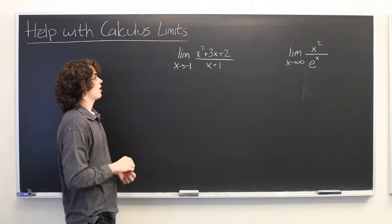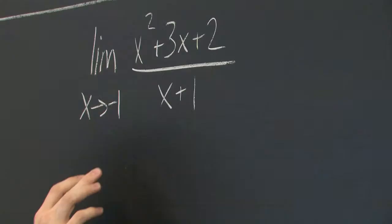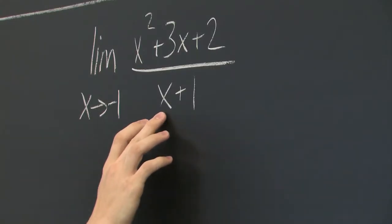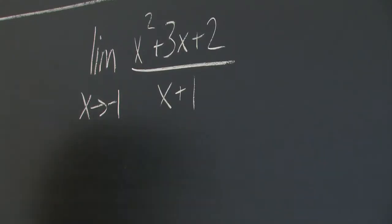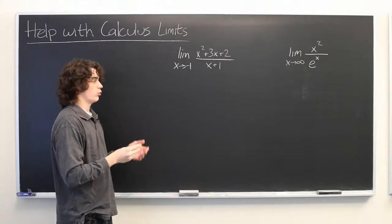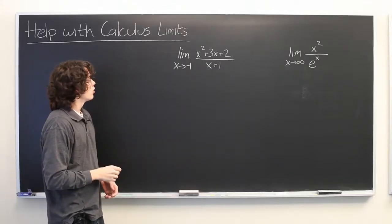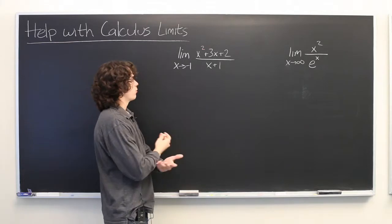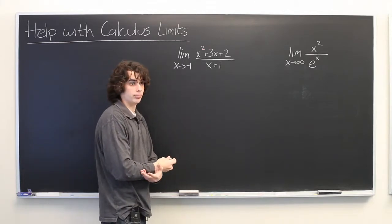However, this is not one of those cases. So you can see if we plug in negative 1 for x, we get a 0 in the denominator, which will be undefined. So we're going to have to come up with some sort of trick for how to compute this limit because it does exist.